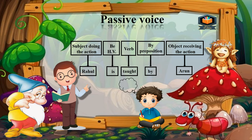Another example of passive voice: Rahul is taught by Arun. Here, Rahul is the subject, though it was the object in active voice. 'Is' is the helping verb, 'taught' is the past participle (third form of the verb), followed by the preposition 'by', and then the object Arun. Note that we can use other prepositions besides 'by' in some passive voice sentences.